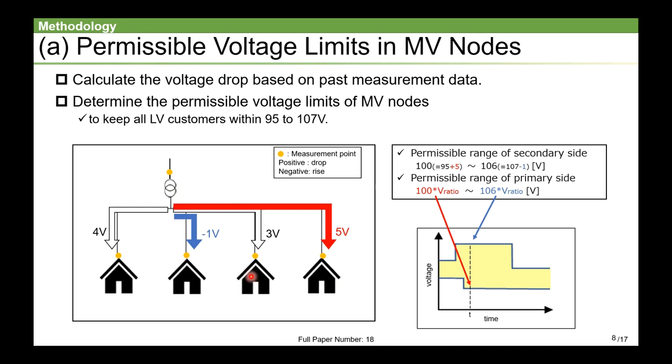This figure shows an example. When the voltage drop is like this, the voltage value on the secondary side must be within 100 to 106V, because this consumer needs to be at 107V and this consumer needs to be at 95V. Therefore, the permissible voltage of the primary side is equal to the secondary side voltage multiplied by the transformation ratio. In this way, the permissible range of the MV node can be determined based on every customer's voltage trend.